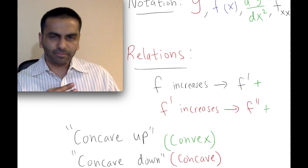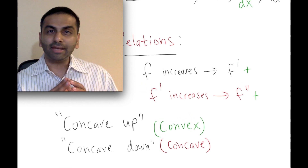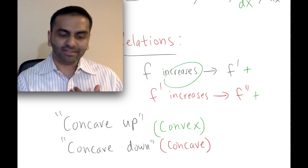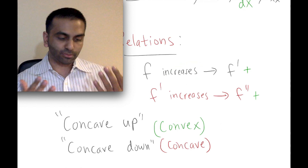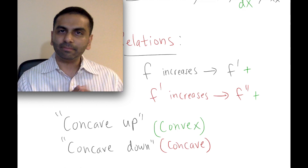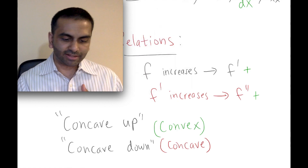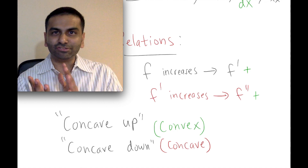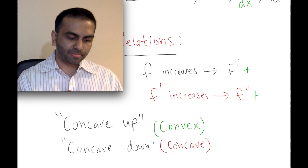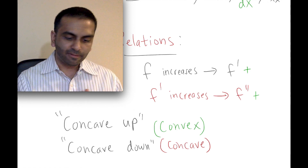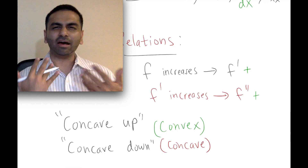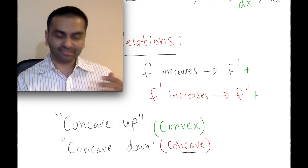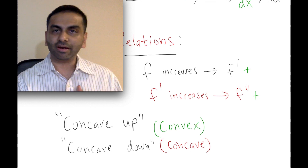Here are a couple of new words: concave up and concave down. Just like positive/negative or increasing/decreasing can describe a graph, so can concave up or concave down. Depending on the field, some use concave and convex instead. Convex means concave up, and concave by itself means what others call concave down.